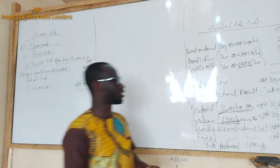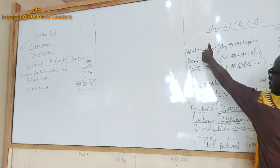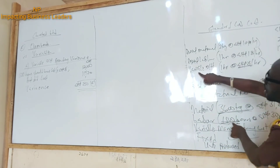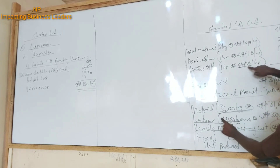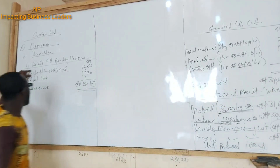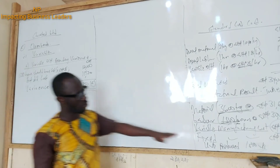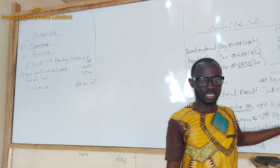We were told in the question that the variable overheads is based on labor hours. The actual labor hours is 1,500, and based on our standard, every hour we pay 8. So 1,500 times 8 — we multiply it — and that is how we get the budgeted amount of 12,000. The actual we paid was 11,920. That's the idea.